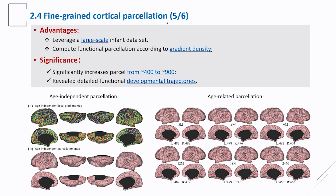Our parcellation is generated from the finally registered results, and we released two versions: an age-independent parcellation, averaging the gradient density map across all infants, and an age-related parcellation, averaging only infants within the same age so that different ages yield different parcellations. One can choose according to their specific needs and task.